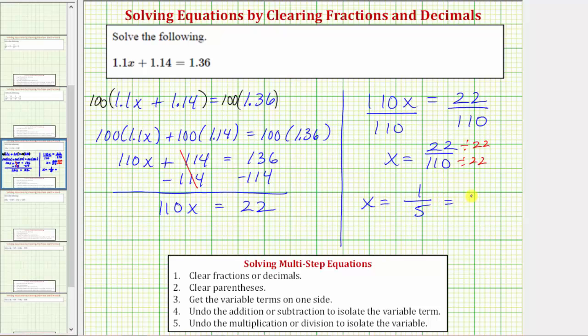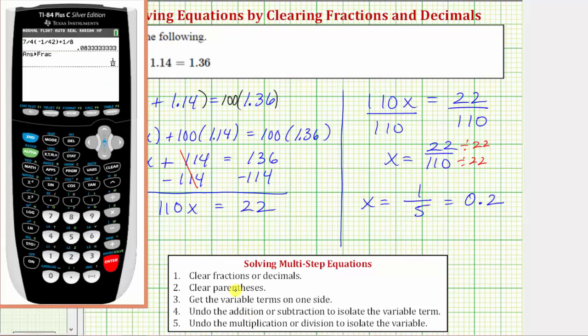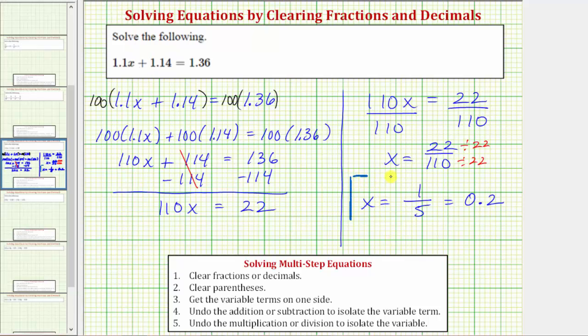But one-fifth is equal to 0.2. Remember, to convert a fraction to a decimal, we divide the numerator by the denominator. One divided by five equals 0.2. Before we go, let's verify our solution satisfies the equation by substituting 0.2 for x in the original equation.